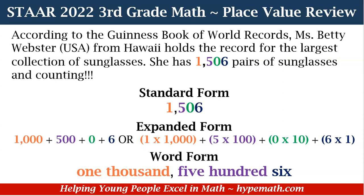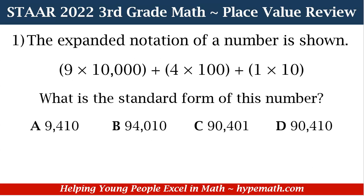And that is our review for place value. Now let's dive into our first problem in our workbook. The expanded notation of a number is shown: 9 times 10,000 plus 4 times 100 plus 1 times 10. What is the standard form of this number? Is it A: 9,410? B: 94,010? C: 90,401? Or D: 90,410?